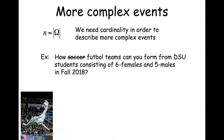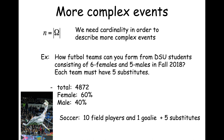Here is another complex problem involving selecting from a number of alternatives. Suppose you wanted to know the number of football teams you can form from DSU students consisting of six females and five males in the fall of 2018. That's much more complicated, and we need additional machinery beyond what we've discussed in order to describe the sample space for this example.